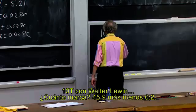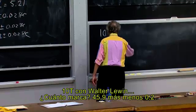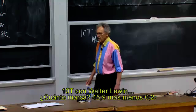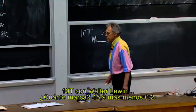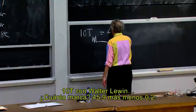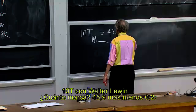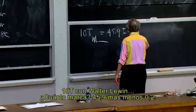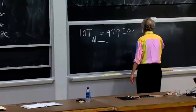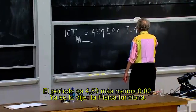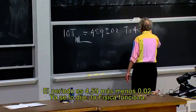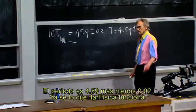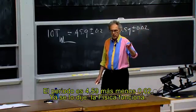10 T with Walter Lewin — what is it? 45.9 plus or minus 0.2. Period is 4.59 plus or minus 0.02 seconds. I told you — physics works.